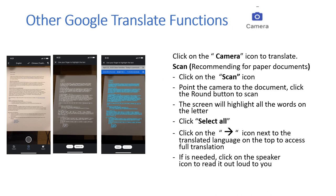Other Google Translate functions. Click on the camera icon to translate. Scan — recommended for paper documents. Click on the scan icon, point the camera to the document, and click the round button to scan. The screen will highlight all the words on the letter.